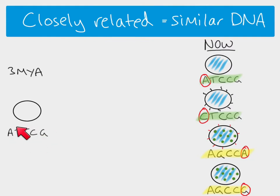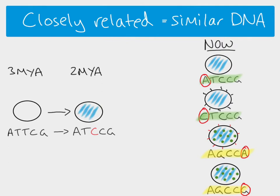We're going to say that common ancestor existed three million years ago. Looking at the DNA sequence there, we can see it is different from any of the present-day species, because over time mutations occur randomly at a fairly regular rate. So if we look at how this species evolved a million years later, changes have occurred as a result of mutation, natural selection, and so on. Two million years later, we can see there has been a mutation and it's now a different species.